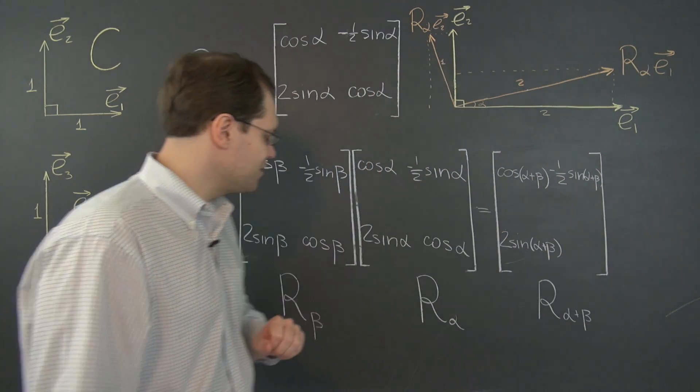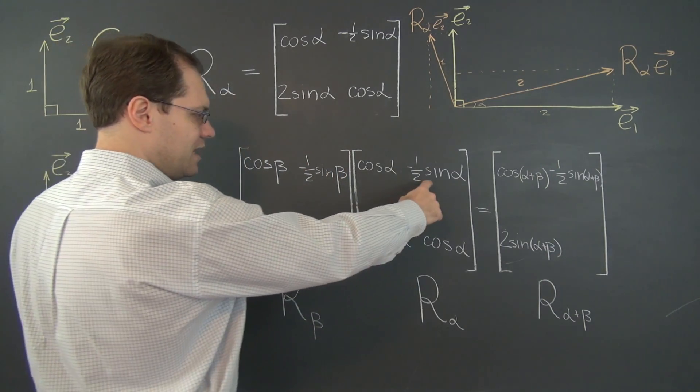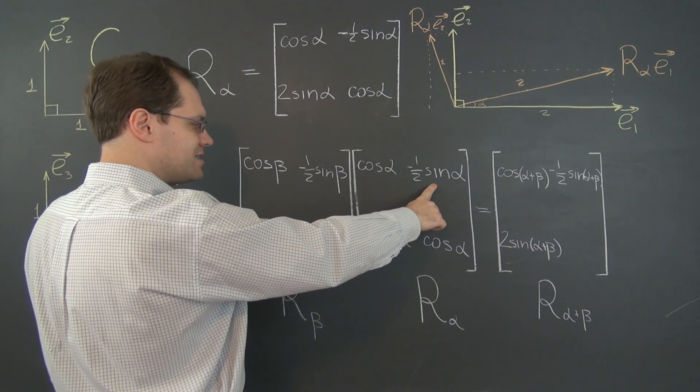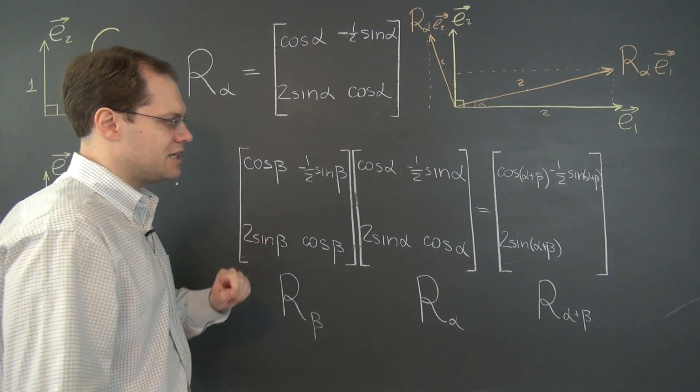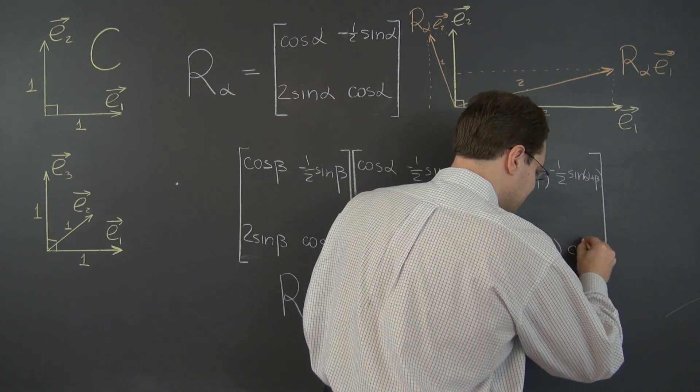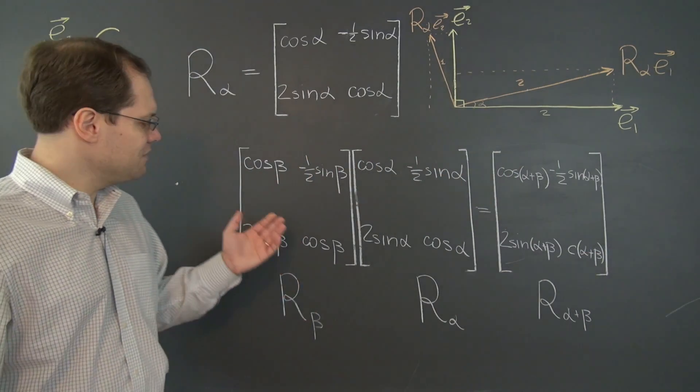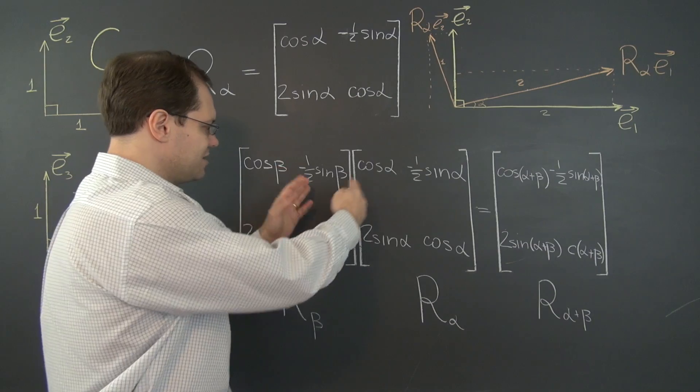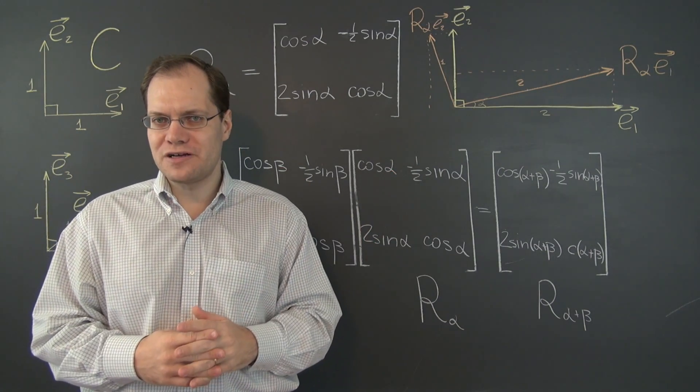And just for our edification, let's see what goes over here. We have, 2 cancels minus 1 half. So we have minus sine alpha sine beta plus cosine alpha cosine beta. Exactly cosine of alpha plus beta. So, even though the matrix was much more complicated and there were really strange coefficients here and there, everything worked out perfectly.